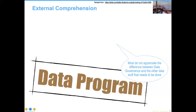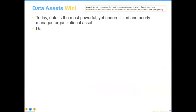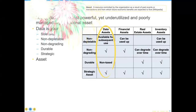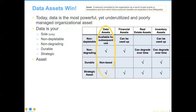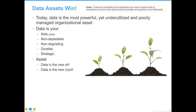Everybody's getting the picture that data as your sole non-depletable, non-degrading, durable, strategic asset beats out the other forms of assets that we have. Financial assets can be used up; real estate and inventory can degrade over time. And if we look at it as an asset, it really has some unique characteristics. Many people want to say that data is the new oil. I'm quite opposed to that because data thought of as oil is a production-only function, and data actually does better on a reuse component.